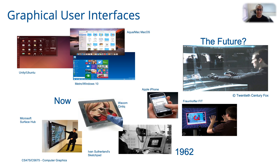Touch interfaces were proposed by Ivan Sutherland, who is a visionary figure in computer graphics, in 1962, and futuristic UI interfaces have been envisioned in movies — here is an example from Minority Report. What we have today is somewhere in between: you can move UI elements by touch, you can move UI elements by hand gestures, and all of this is driven by neat graphics algorithms in the background.